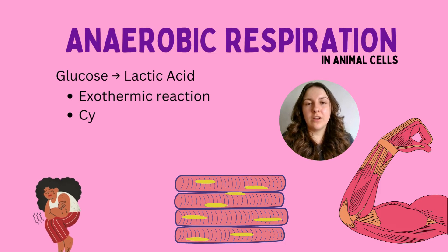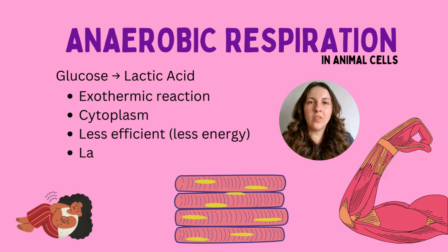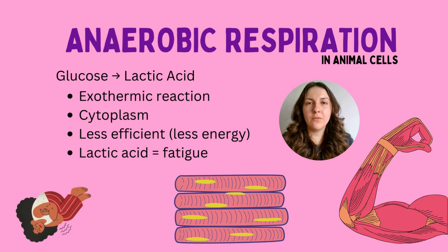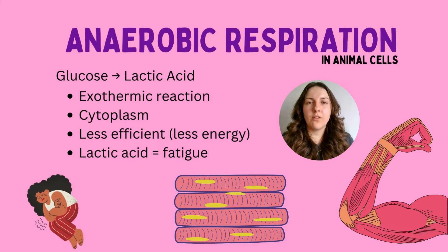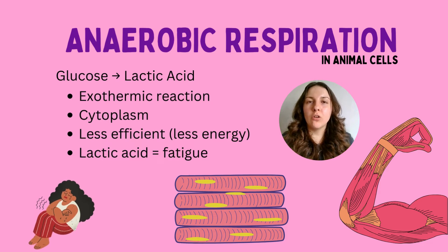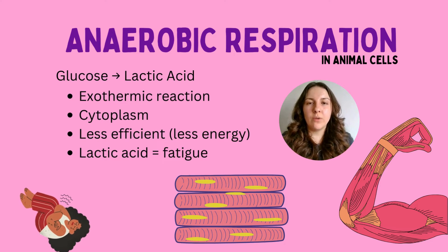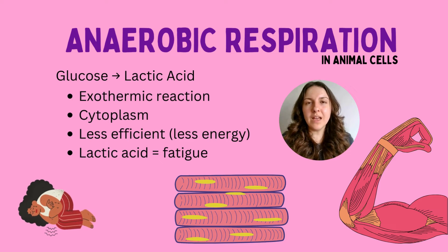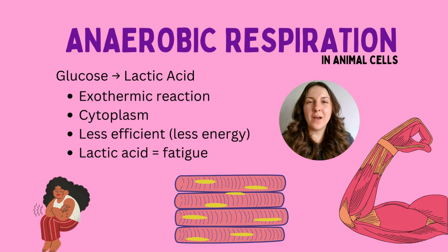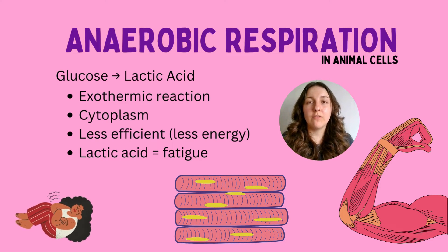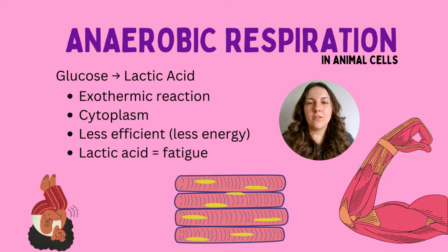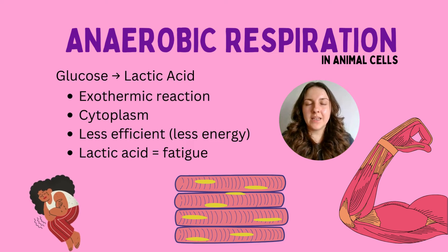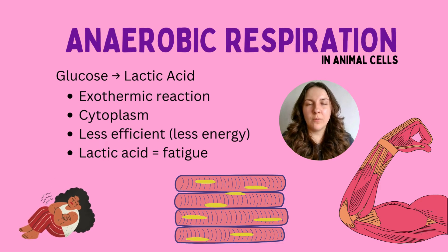There is another version called anaerobic respiration. We need to know two versions: one that occurs in animal cells, and one in some plants and yeast cells. Anaerobic respiration is where glucose is broken down without a sufficient supply of oxygen — for example, during prolonged exercise. It is a very inefficient way of breaking down glucose, but the body uses it as a backup mechanism — a kind of fight-or-flight response. Because there isn't enough oxygen, less energy is released. It's still exothermic, but it happens in the cytoplasm rather than the mitochondria, and lactic acid is produced, which causes muscle fatigue and painful cramping.